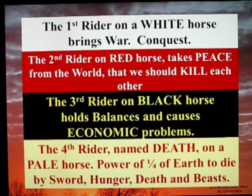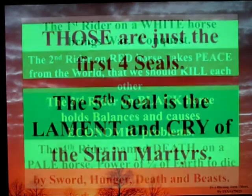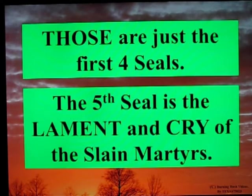The fourth rider named Death on a pale horse has the power of causing one quarter of the earth to die by sword, hunger, death, and beasts. Those are just the first four seals.